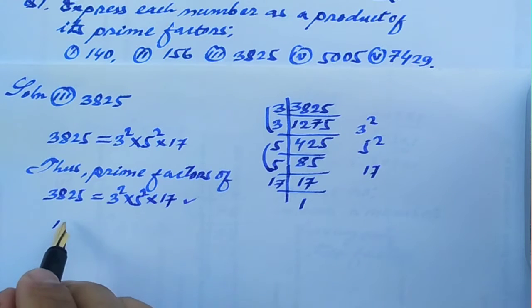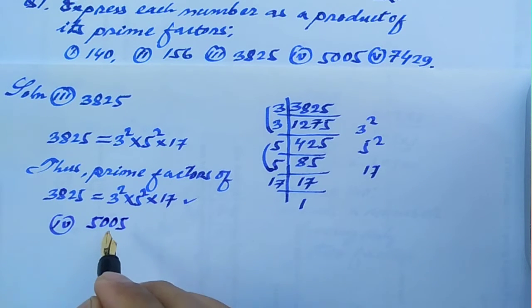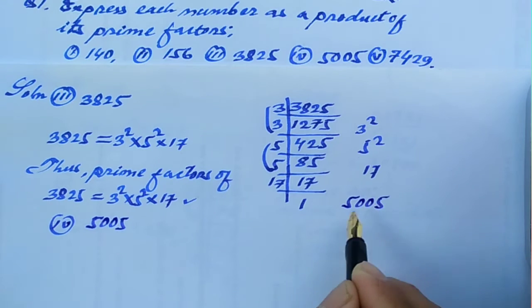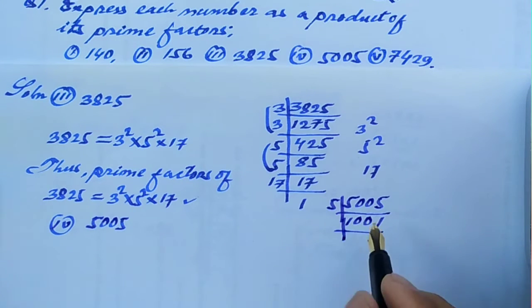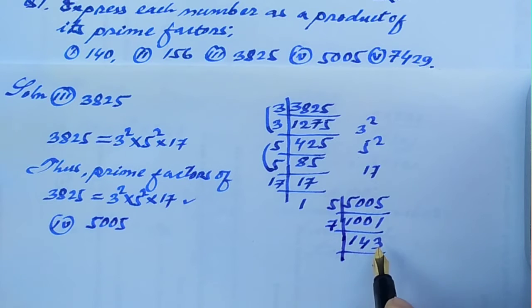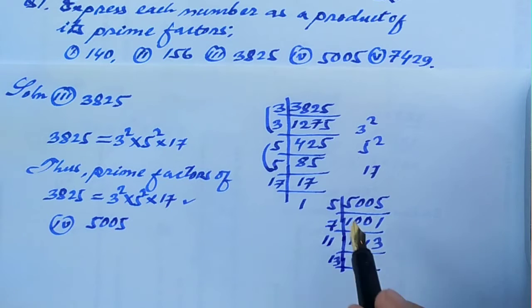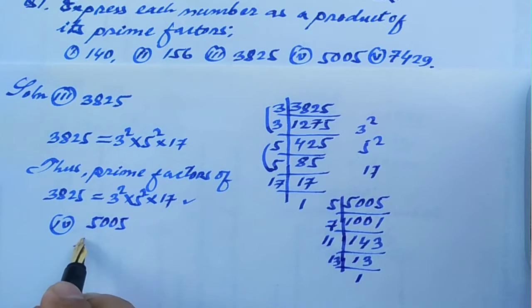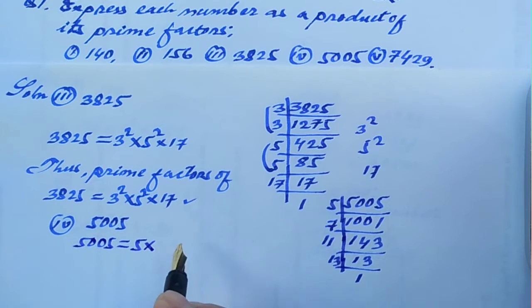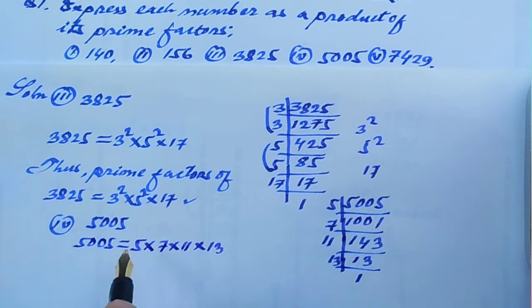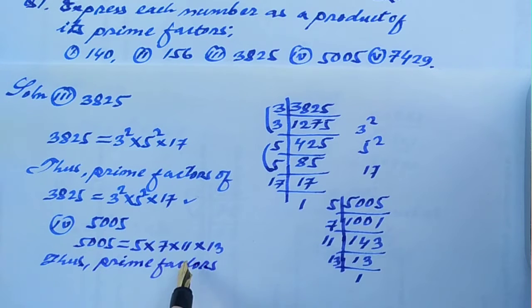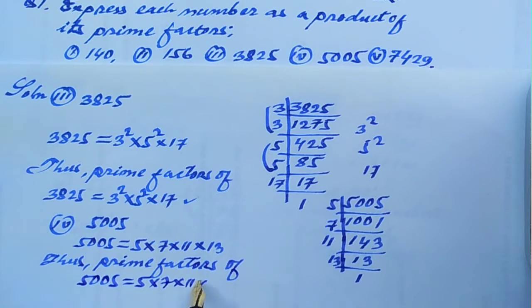Now let us come to Roman numeral 4, which is 5,005. Let us take the prime factorization of 5,005. It is divisible by 5 giving 1,001. Then 7 into 143 is 1,001. Then 11 into 13 is 143. So 5,005 equals 5 into 7 into 11 into 13.